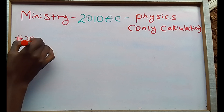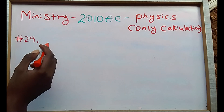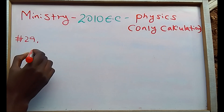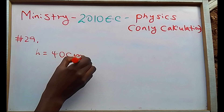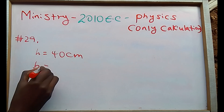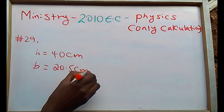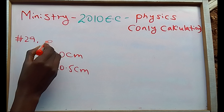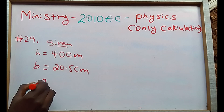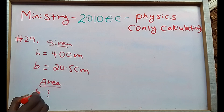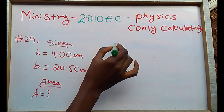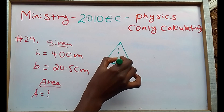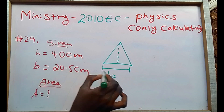Question number 29: The height of a triangular block is 40 centimeters. The height of a triangular block is 4 centimeters, and its base is 20.5 centimeters. What is the area of the triangular block? Given: the height and the base. We're going to draw the picture here. Assume that this is the triangular block, and it has a height. The base is 20.5 centimeters.